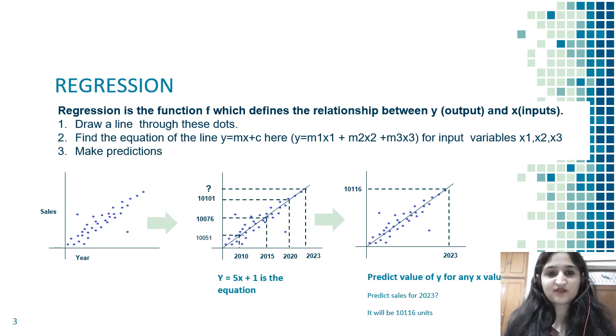Let's start with the first concept: regression. Regression is the way you define the relationship between y, which is your output, and x, which is your input. X can be x1, x2, x3, x4 - basically input variables based on which you are going to predict some output variable y.